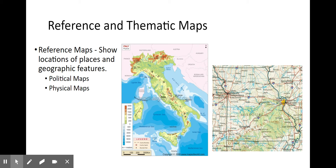One of them is a physical map of Italy, showing elevation in meters. The other one is a political map, meaning it shows cities and states and political distinctions, focused in on Missouri. Both of these are examples of reference maps.